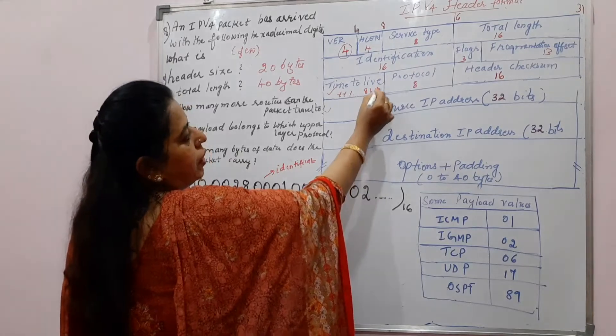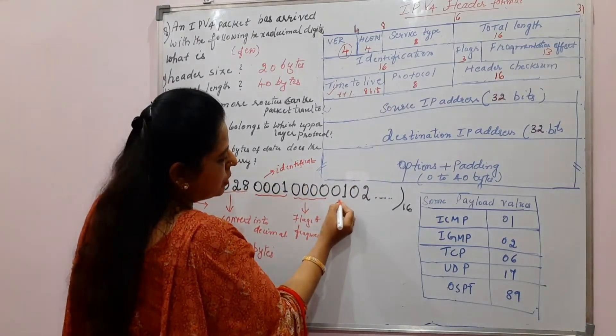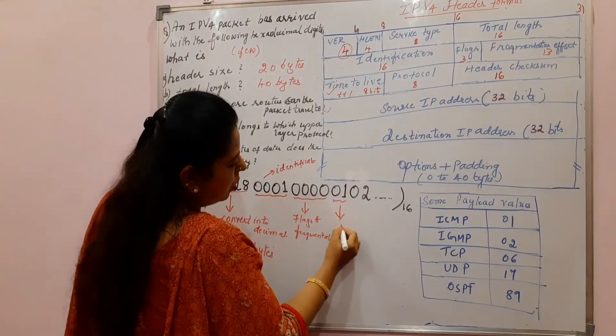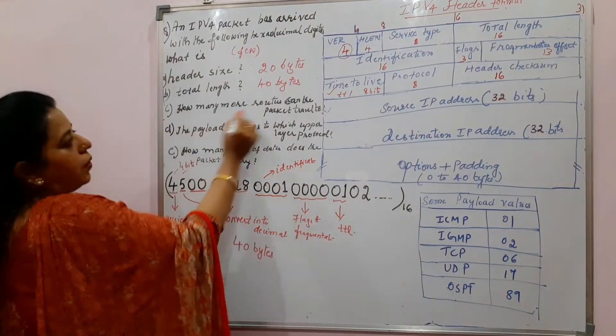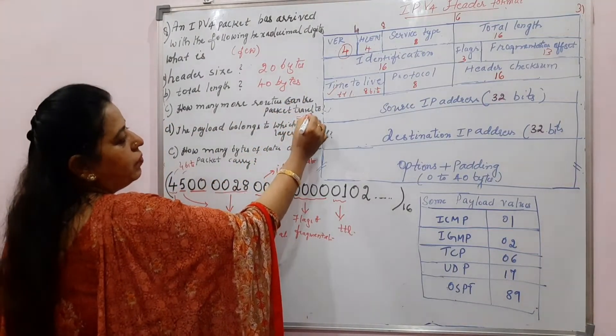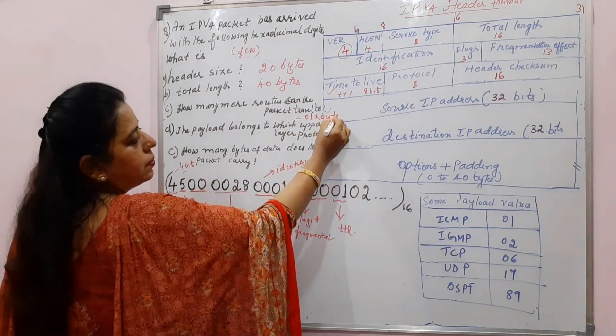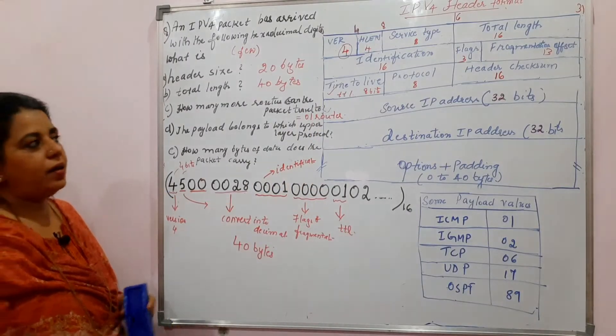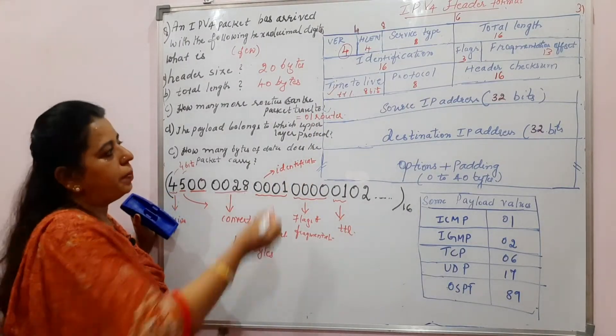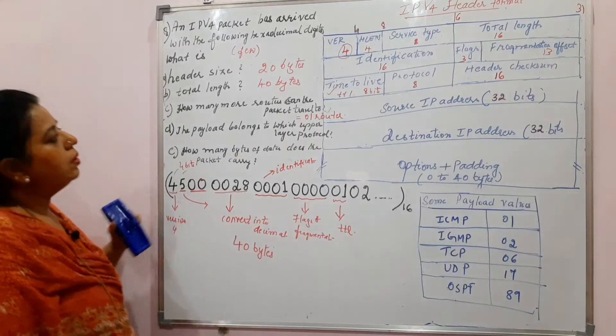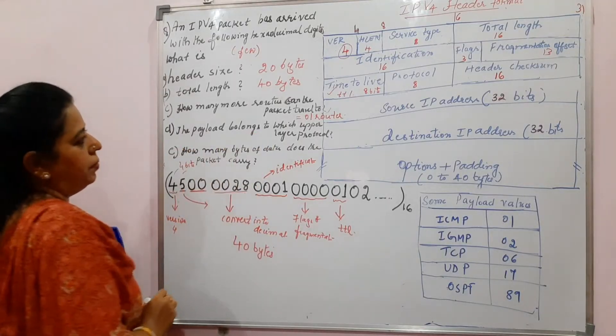Time to live is 8 bits. If it is 8 bits, this is 4, this is 4. This value is TTL. How many routers can the packet travel to? Only one router. When TTL value is here, 1. The packet will travel only one router is there here.